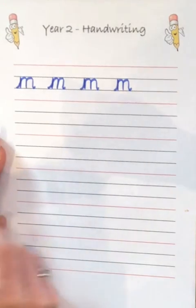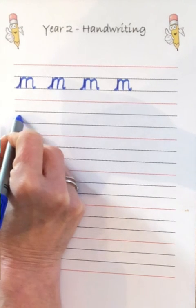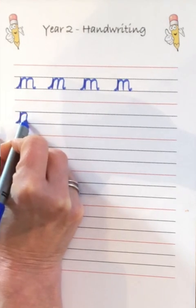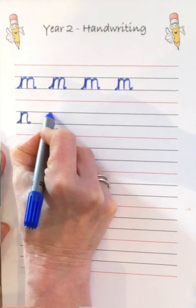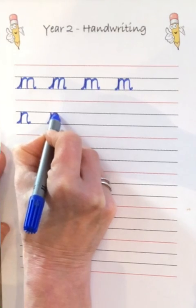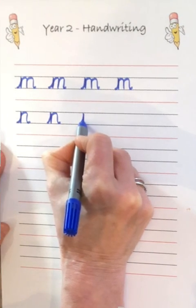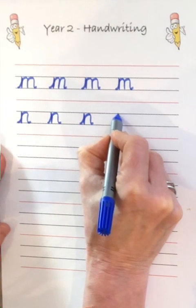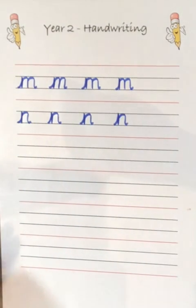The letter N is easier than the M because it's only got one up and over. So it's the same pattern as the M. You go up to the grey line, down to the grey line, back up on the same line and you go over and exit. That's nice and easy, isn't it? So up, down, up and over. Go up, down, up and over. One more time. Up, down, up and over. There we go, the letter N.